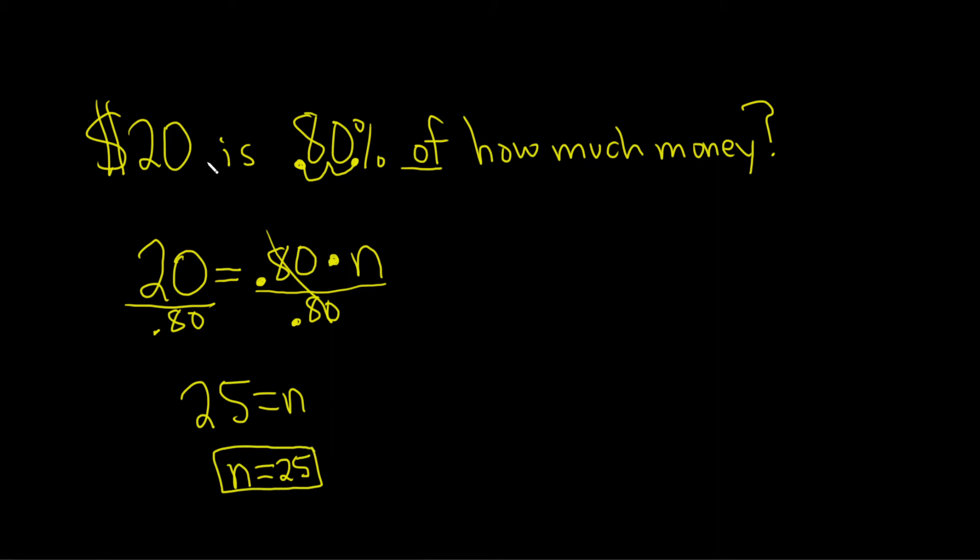Let's read it back together. Twenty dollars is eighty percent of twenty five dollars. Actually we should indicate that it is money we're talking about right. So it's not just twenty five, it's twenty five dollars. I hope this video has been helpful. Good luck.